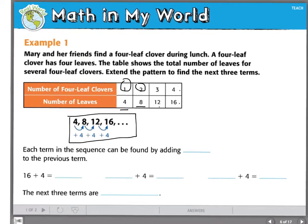To analyze the pattern you can see what is the difference between two terms. To turn four into eight, or eight into twelve, or twelve into sixteen, you would need to add four. Each term in the sequence can be found by adding four to the previous term. Now, let's look and see if we can extend the pattern to find the next three terms.